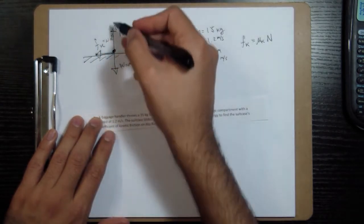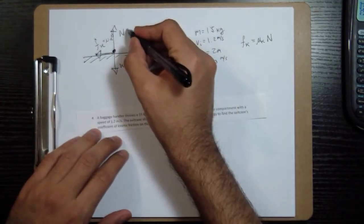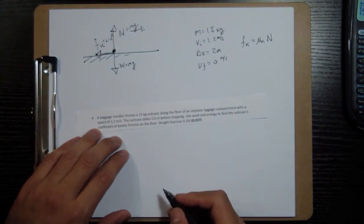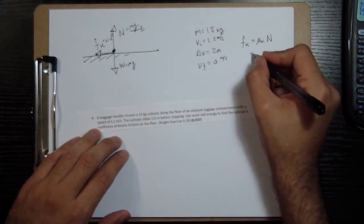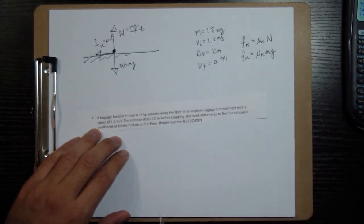And this normal force, because we don't have any incline or anything, so this normal force will have to balance out the weight, so this will also be mg. So the friction force will be mu k times mg.